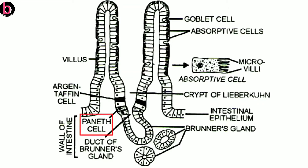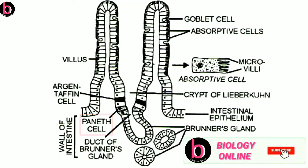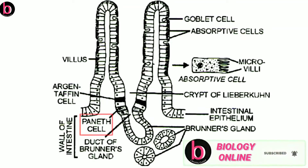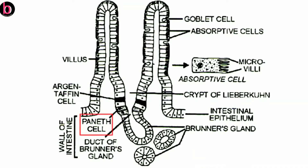Paneth cells' functions are not entirely certain, but they are responsible for secretion of lysozyme, which causes phagocytosis — that is, ingestion and killing of harmful pathogenic substances. The second type is argentaffin cells, which secrete secretin hormone along with serotonin, which is a neurotransmitter.